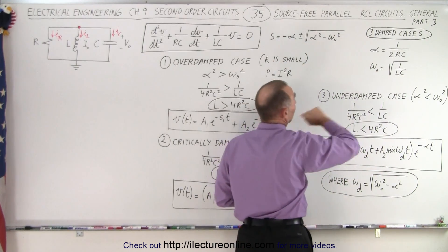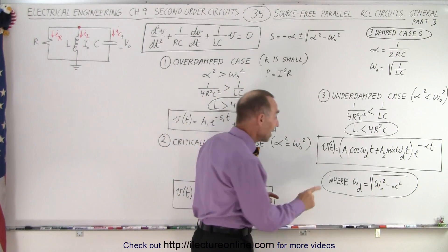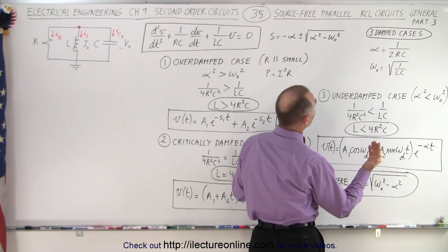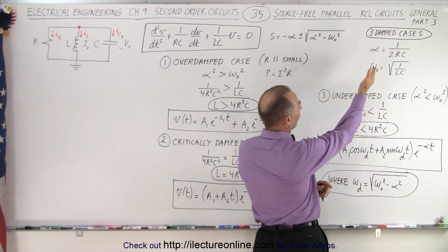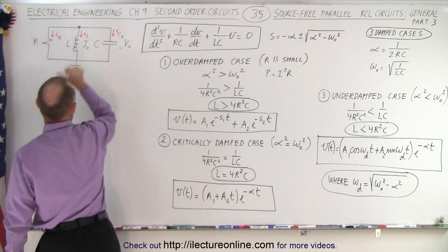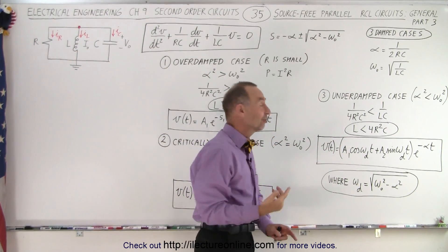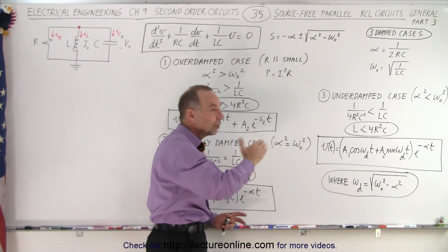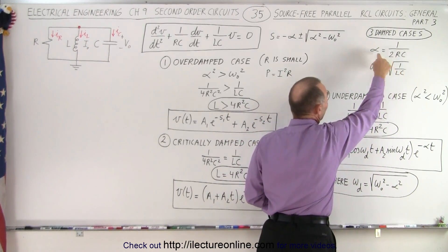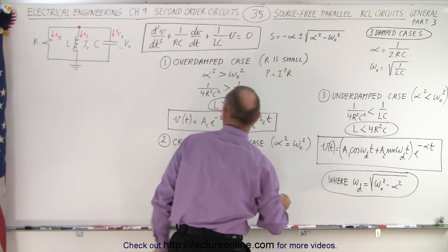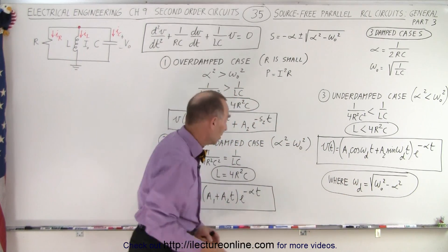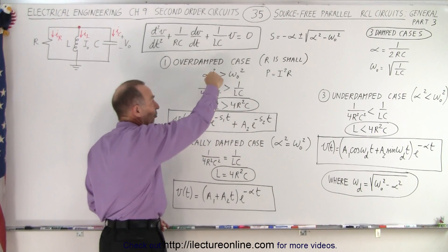The damped frequency of the circuit is the square root of omega sub-naught squared minus alpha squared. When alpha goes to zero — which happens when R becomes infinite — no current flows to the resistor, all current flows to the inductor and capacitor, and you recover the natural frequency. But if some current flows to the resistor, the oscillation frequency is slower by this factor. When R becomes very small, alpha becomes large, lots of current flows to the resistor, the dampening effect is much greater, and the oscillation is much slower. Eventually you reach critical damping, and then overdamping as the resistor gets smaller, at which point you no longer have oscillation.